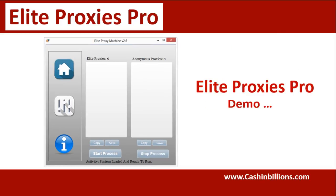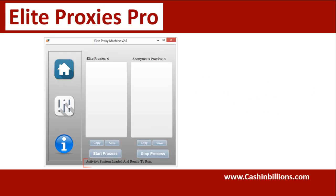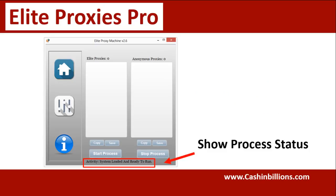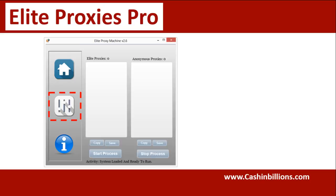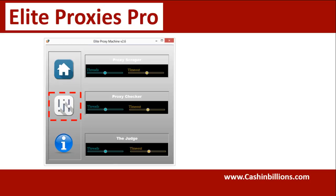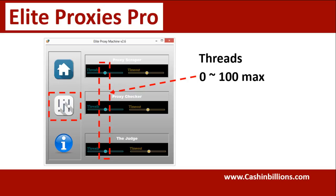Let's walk through the proxy software. Once you open up the software, right here is going to let you know what's going on throughout the process. The first thing that we want to do is click this settings tab. From here, we can set the number of threads that we want to use and the timeouts that we want to use.